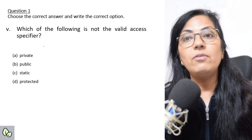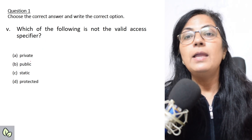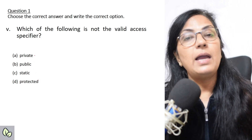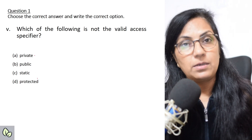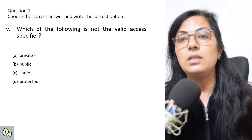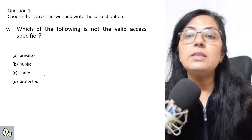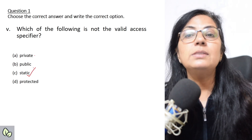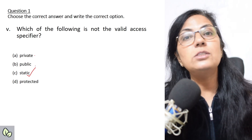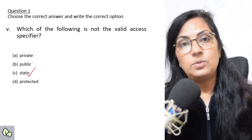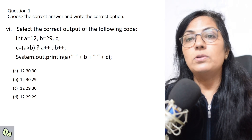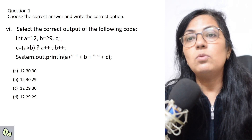Next question: which of the following is not a valid access specifier? In your syllabus you have private, public, and protected — these three access specifiers. So out of the four given options, the odd one out is static. Static is not an access specifier.